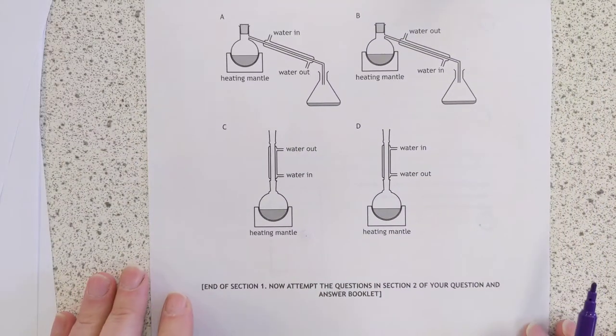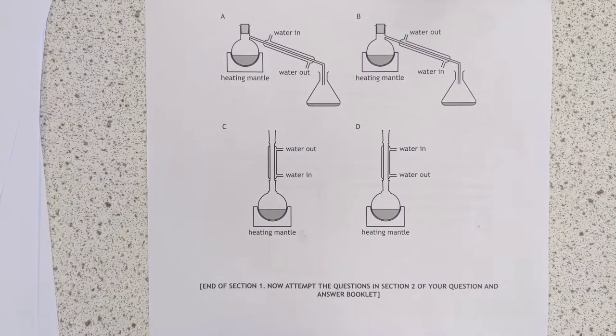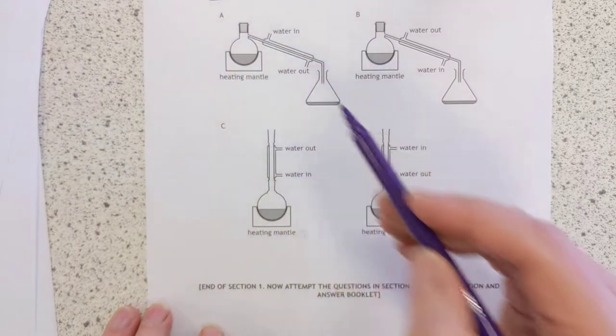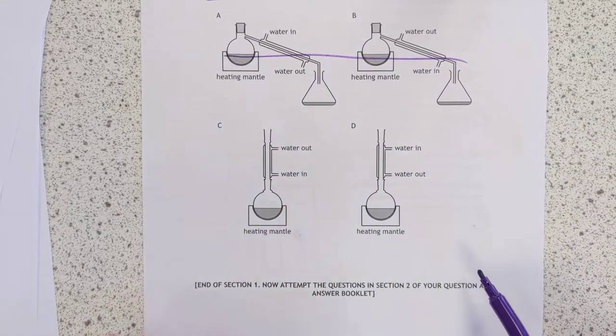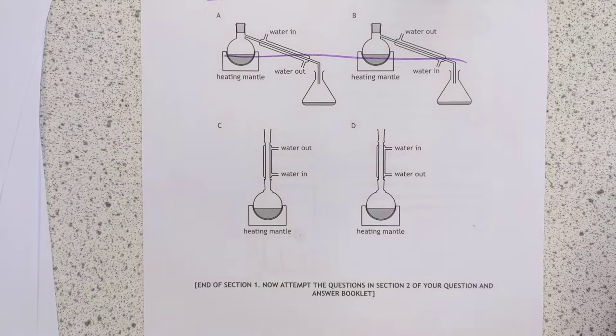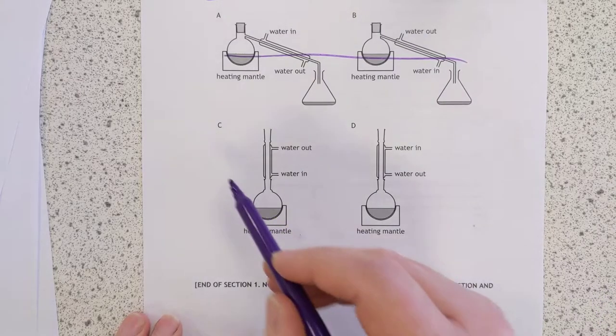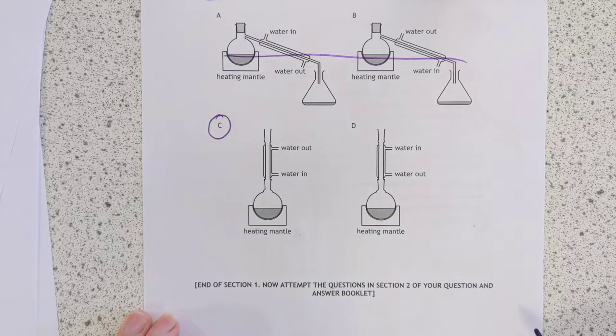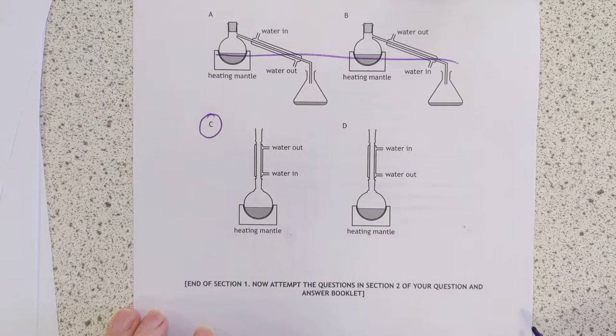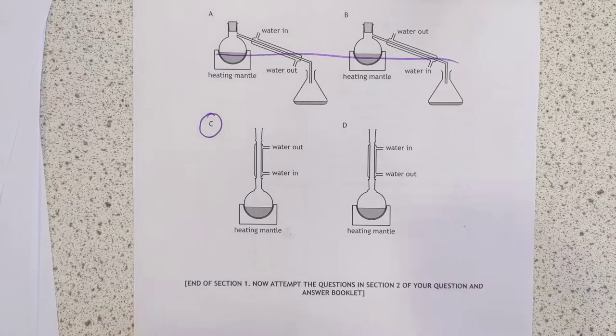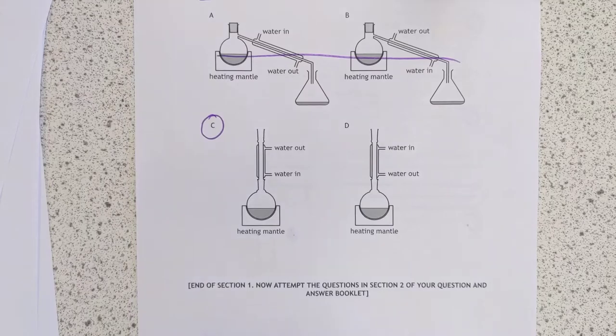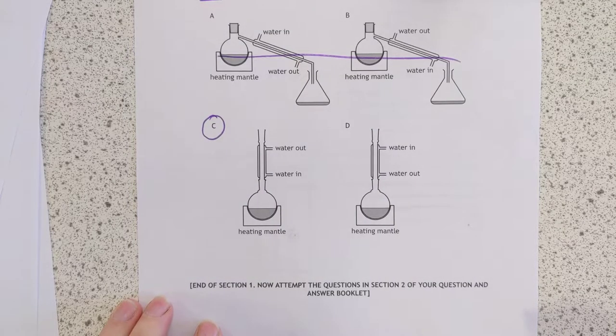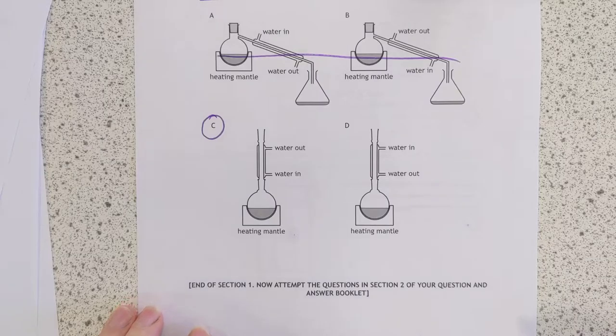And number 30, which of the following diagrams shows the apparatus correctly set up for heating under reflux. Reflux is a vertical condenser. So these two are both wrong. Now, this is an interesting one. I have a slight argument with the SQA here. They will tell you the answer is C. So, I'm not going to go into why counter-current flow is more efficient in condensers. But then again, they could come back and argue that for a simple condenser, like a Liebig condenser like this, counter-current flow is not important. So, I would love to argue that point, but I'm not going to.